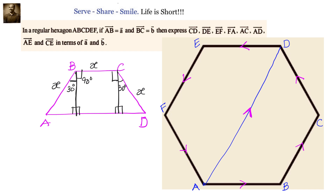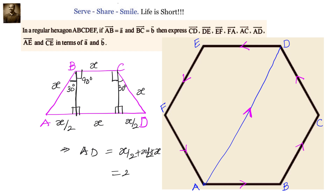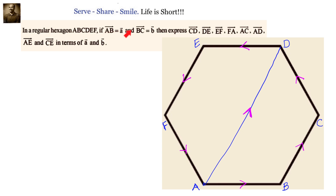Now, we have given the directions for A, B, C, D, E, F, A. We started with AB and continued in the same direction: AB, BC, CD, DE, EF, FA. We can see that AD and BC are in the same direction, and the magnitude of AD is 2 times that of BC. Since BC magnitude is X, then AD magnitude is 2X. So we can write AD vector equals 2B vector.